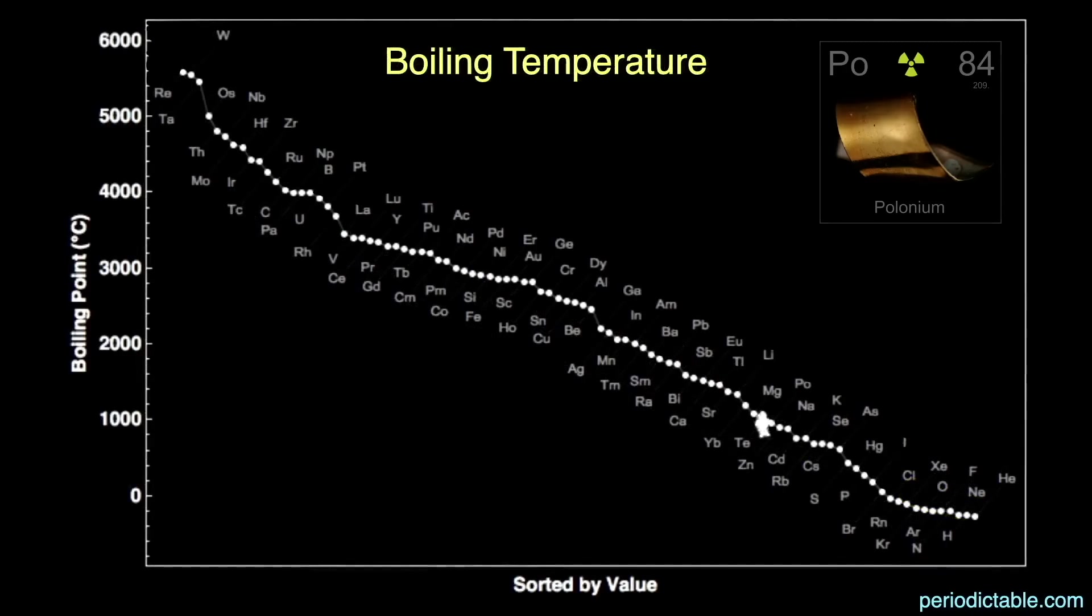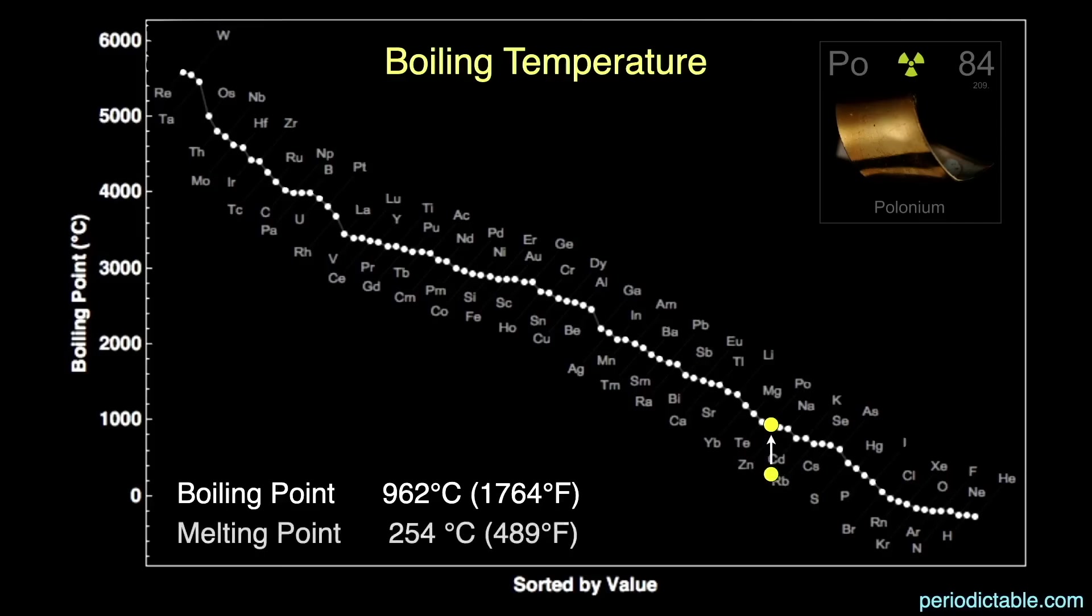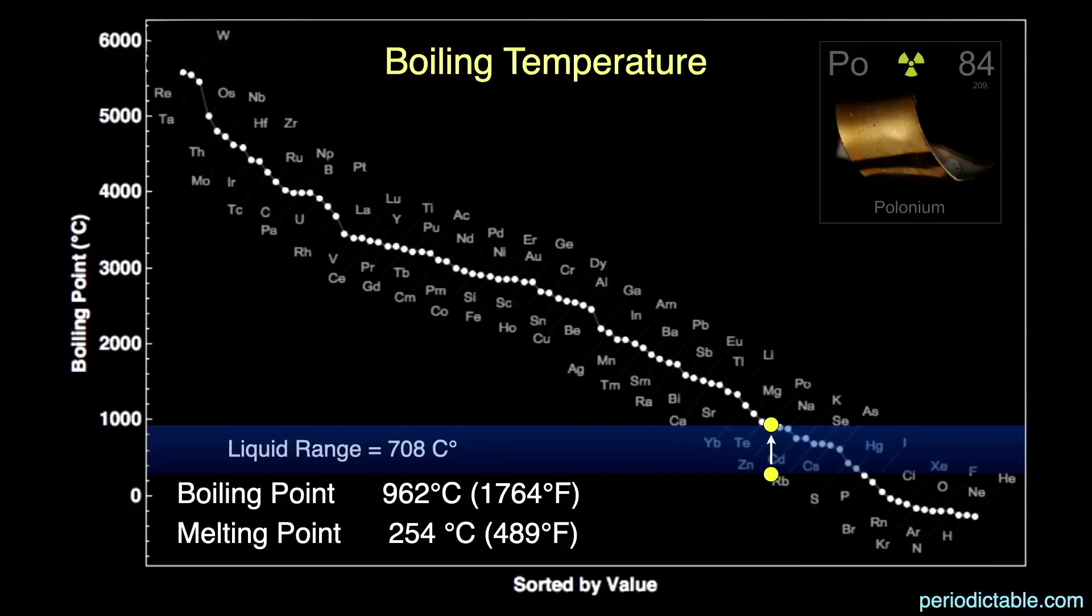Polonium boils at a low 962 degrees Celsius, or 1,764 degrees Fahrenheit, giving it the 75th highest boiling point, or the 25th lowest boiling point, of all the elements. That's only 708 degrees Celsius above its melting point, giving it the 64th largest liquid temperature range of all the elements.